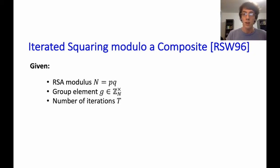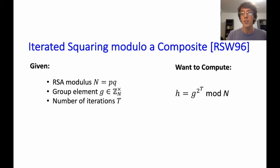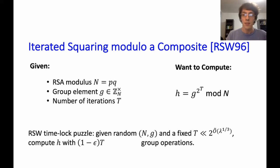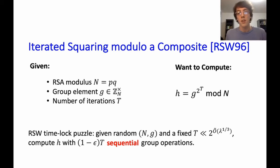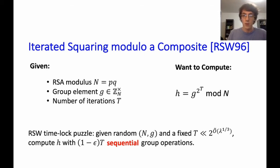There is a hard problem based on iterated squaring: it's believed that it takes close to time t to solve this problem, and moreover even given a large amount of parallelism, it still requires about sequential time t even with super-polynomial parallelism. This is the hard problem underlying the RSW time-lock puzzle. We're interested in a protocol for the language of pairs (g, h) given a fixed modulus n.